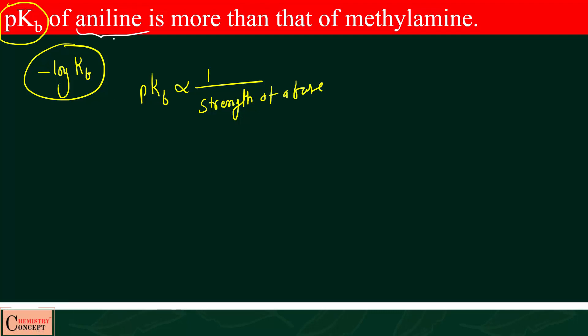The question is essentially asking why is aniline less basic than methylamine, because high PKB means less basic. The answer requires understanding the structures.